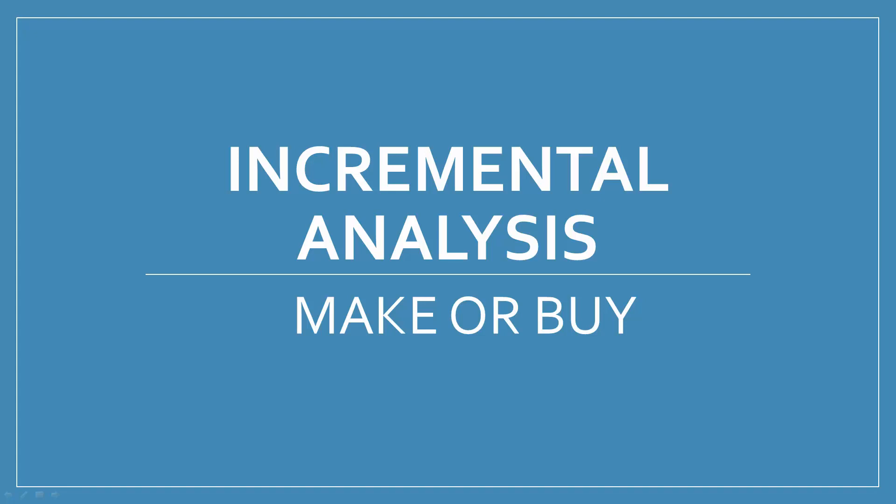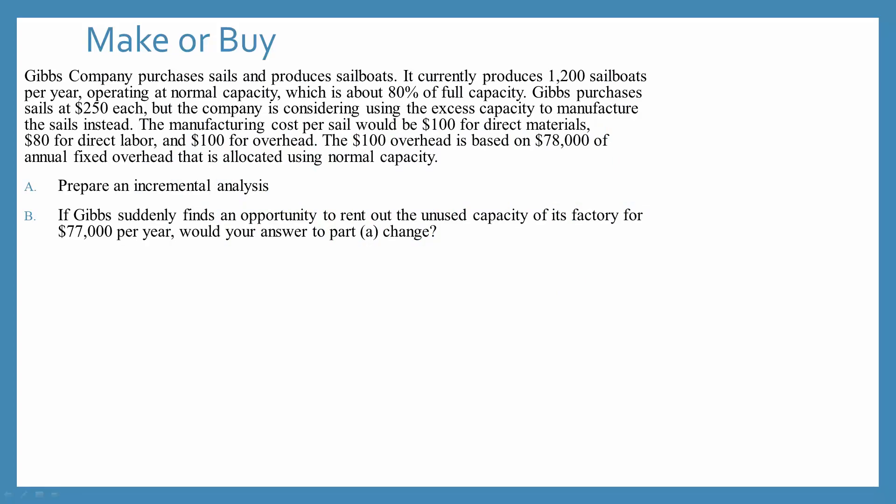In this video, I cover the basic incremental analysis for the make or buy decision. Gibbs Company purchases, sells, and produces sailboats. It currently produces 1,200 sailboats per year, operating at normal capacity. Gibbs purchases sails at $250 each, but the company is considering using the excess capacity to manufacture the sails instead.